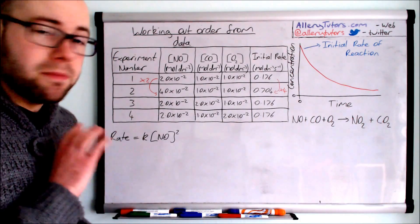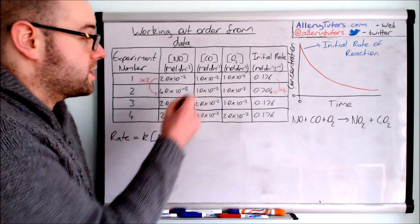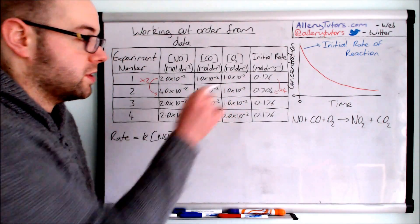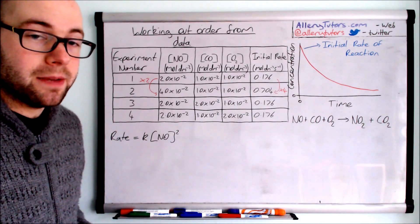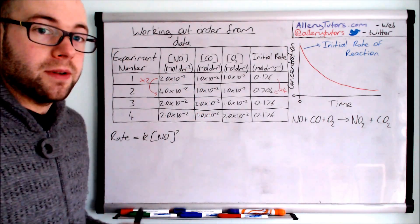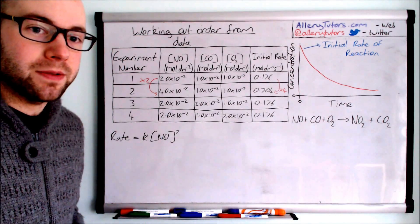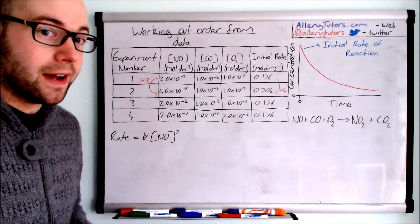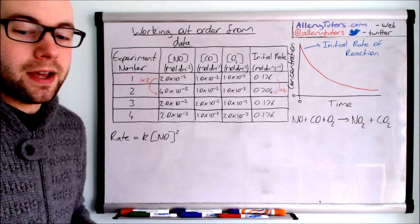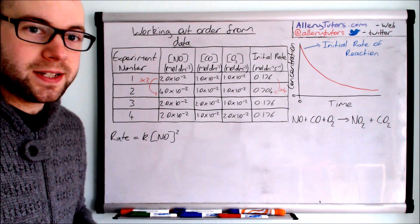There is a more complex example of this as well. Sometimes you might get rate tables where you have changes in two of them, not just one remaining constant. That's a little bit more difficult. It's a slightly different method for working that out. If you want to look at that video a more complex example just click on the link below. But other than that that's it. There's your working out order from data. Bye bye.